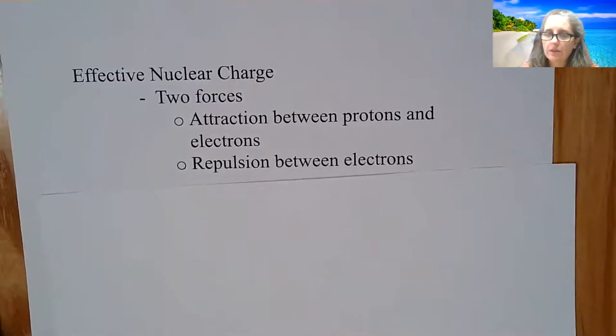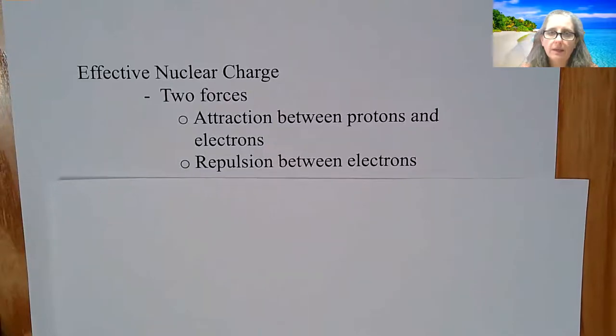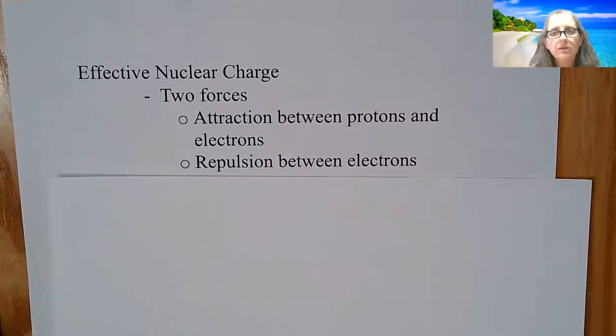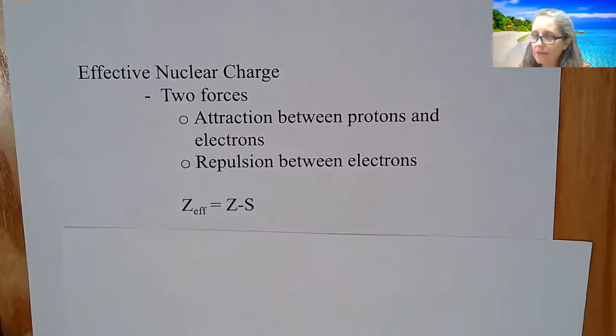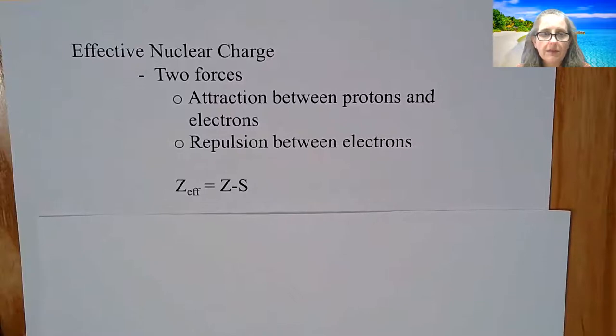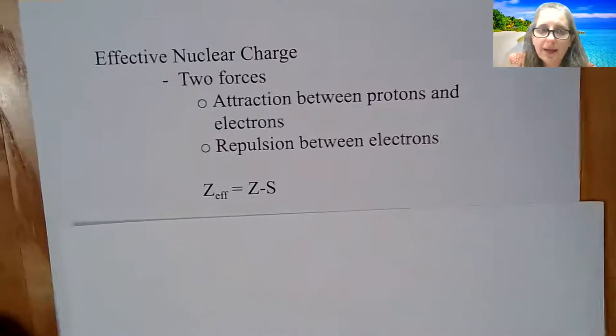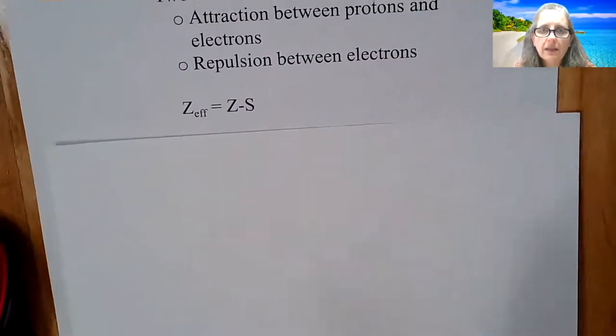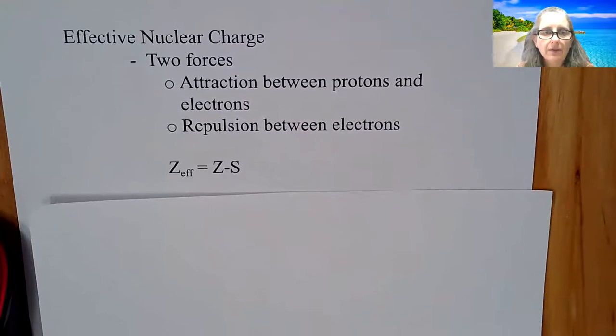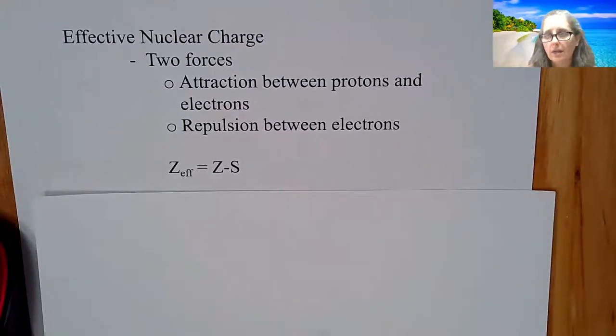So we have two forces competing. We have the attraction between the protons and the electrons, and then if electrons get too close to each other, they repel. So what we have is something called Z effective. The formula is Z_eff equals Z minus S. And again, we are not going to do any calculations with this. It's more of understanding the concept.